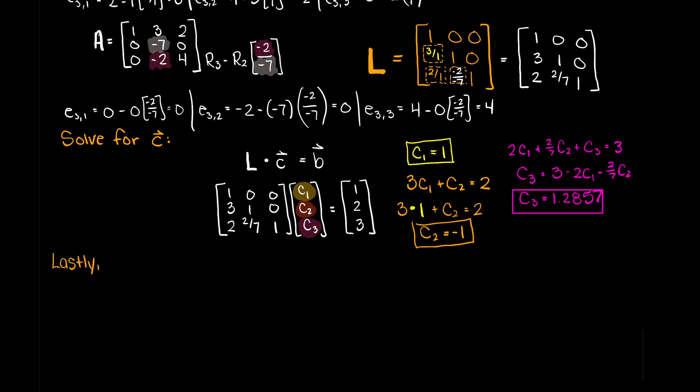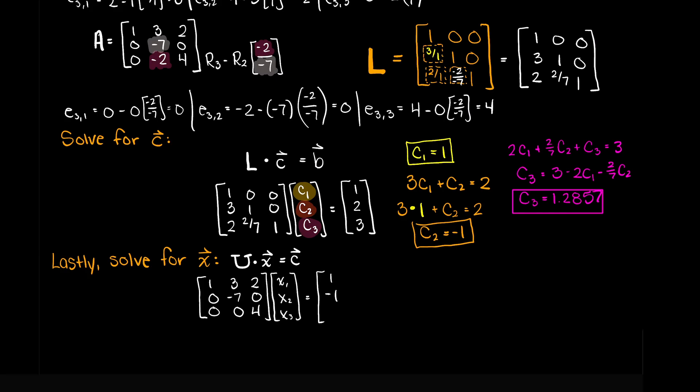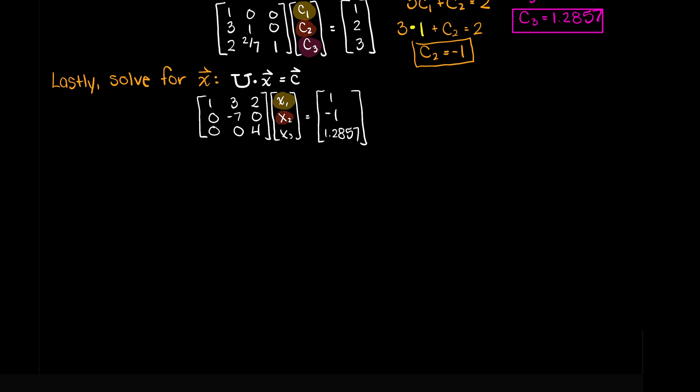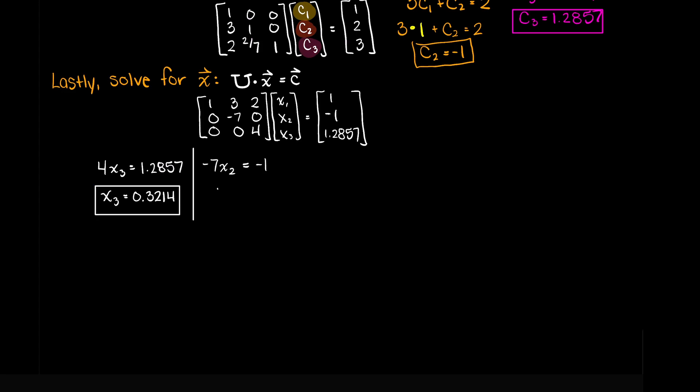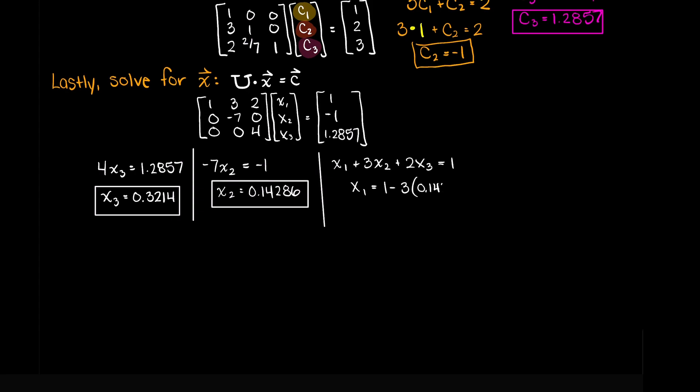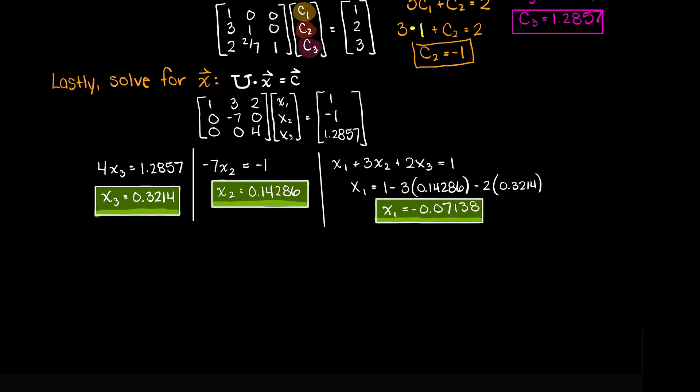Our final step in completing our LU decomposition example is solving for our unknown x variables. As you can see here, this is done by using backward substitution, which I will go ahead and complete for you. There we go, we have x3 is equal to 0.3214, x2 is equal to 0.14286, and x1 is equal to minus 0.07138.